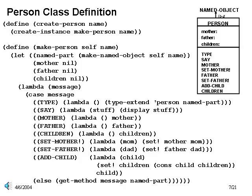Here's our person class definition. This has our standard structure, but now we have both internal inheritance relationships and other local state variables for has-a relationships. To implement the inheritance of named objects, we have to do three things. First, we have an internal named object handler, called namepart here. Second, we override the type method with our standard type extension, to indicate that the person type extends all of the type stuff contained in our name part. Third, at the very bottom, we use get-method to pass along the message to the inherited name part, in case the message is not handled directly here.